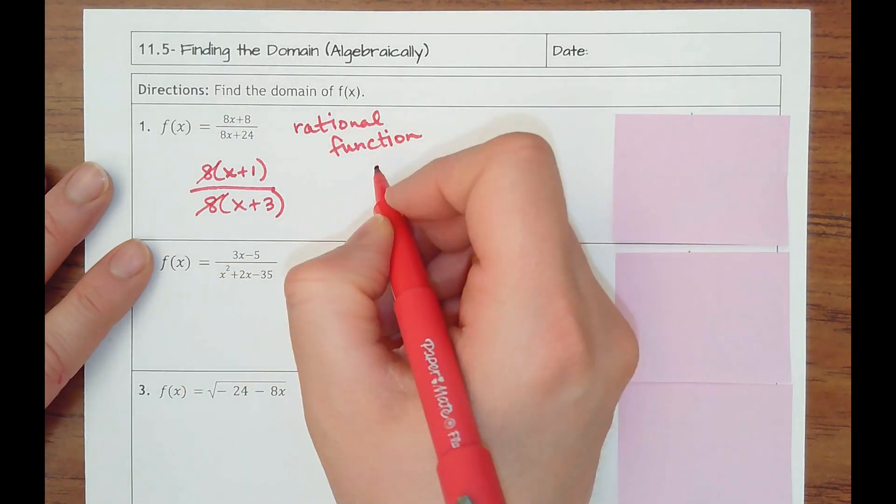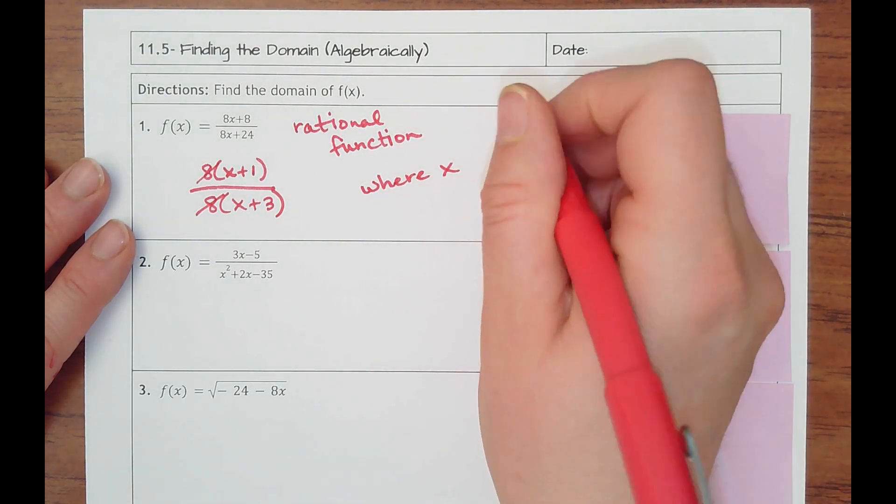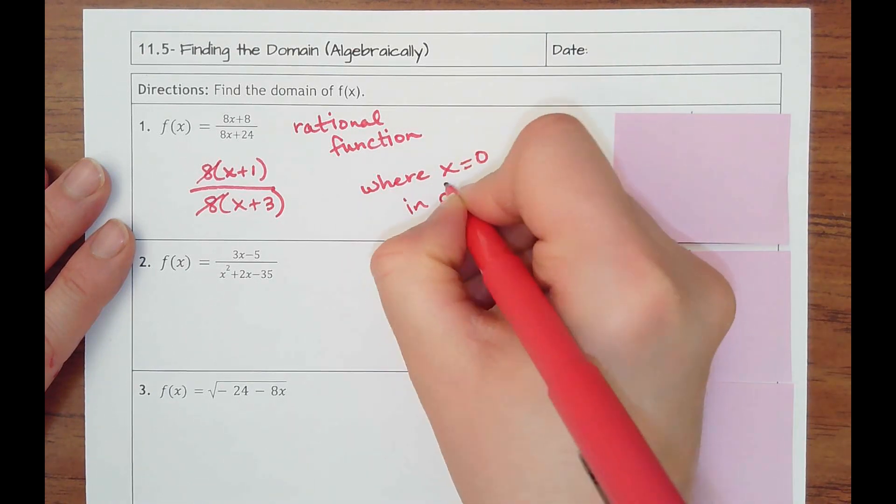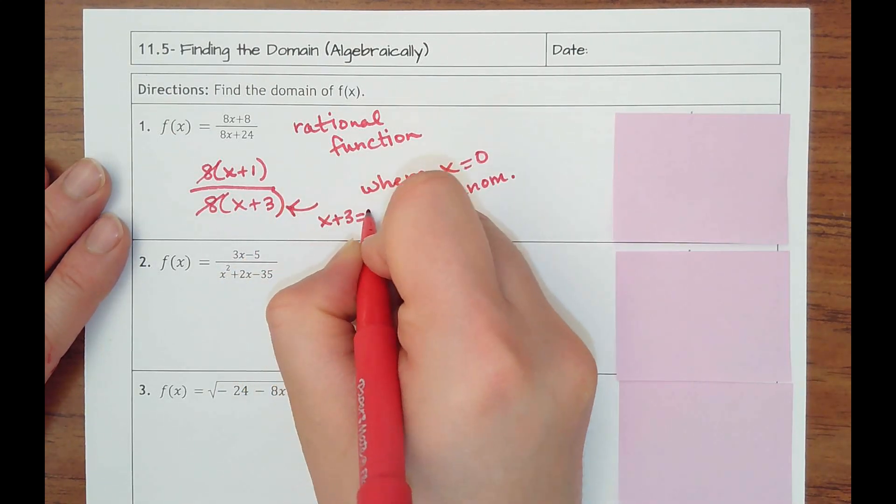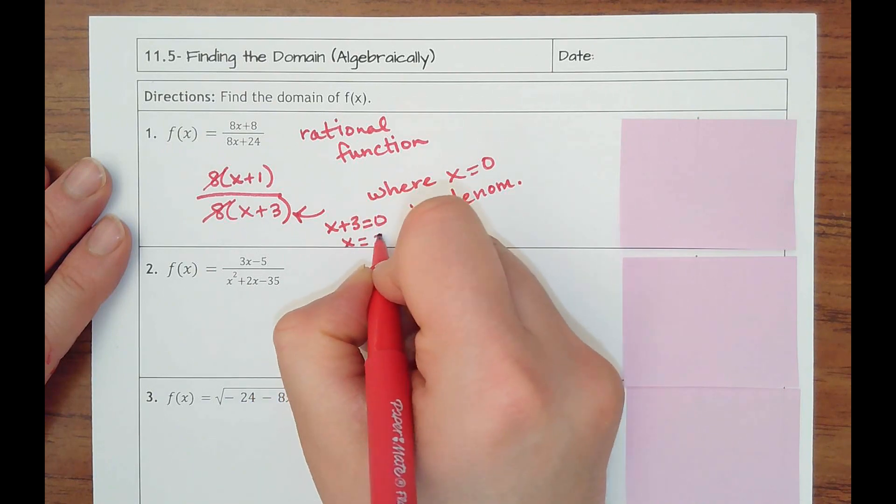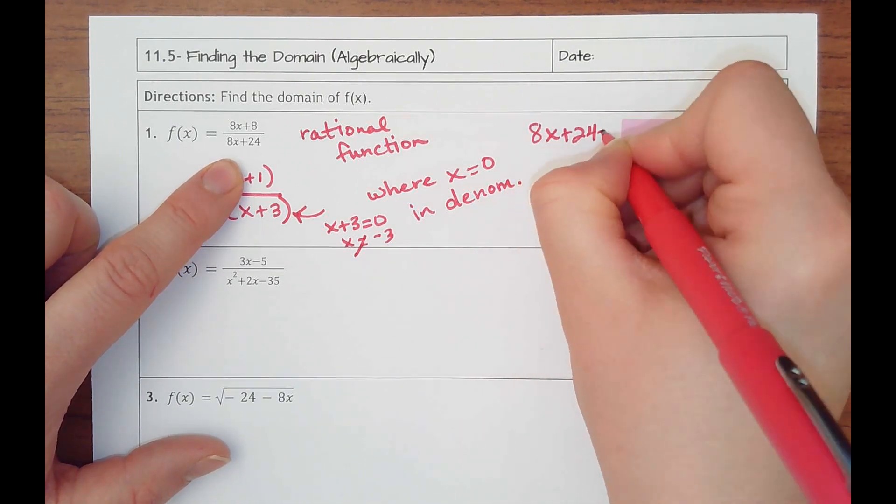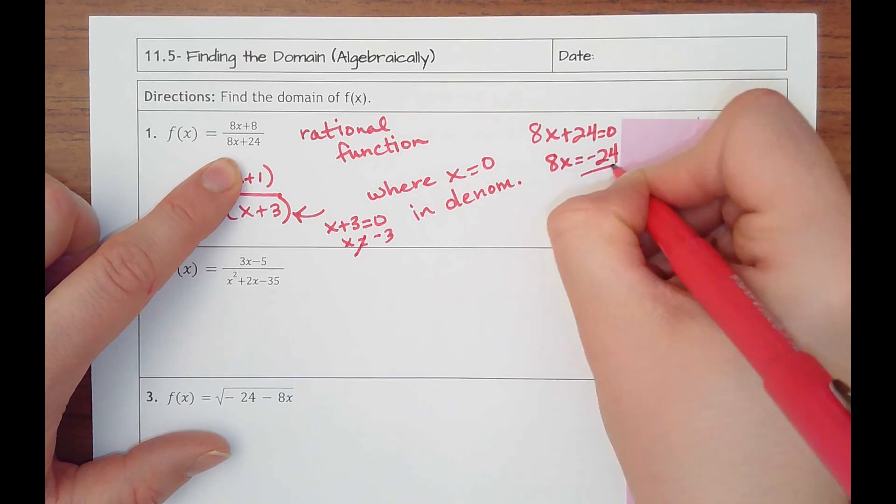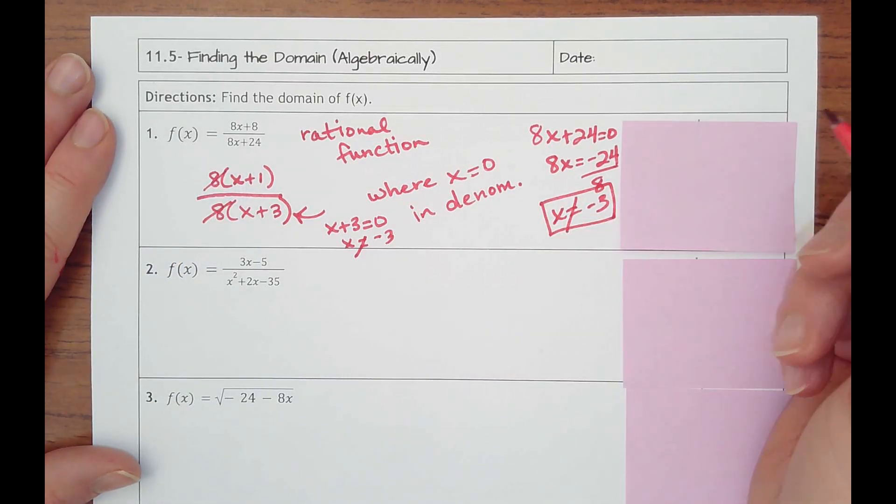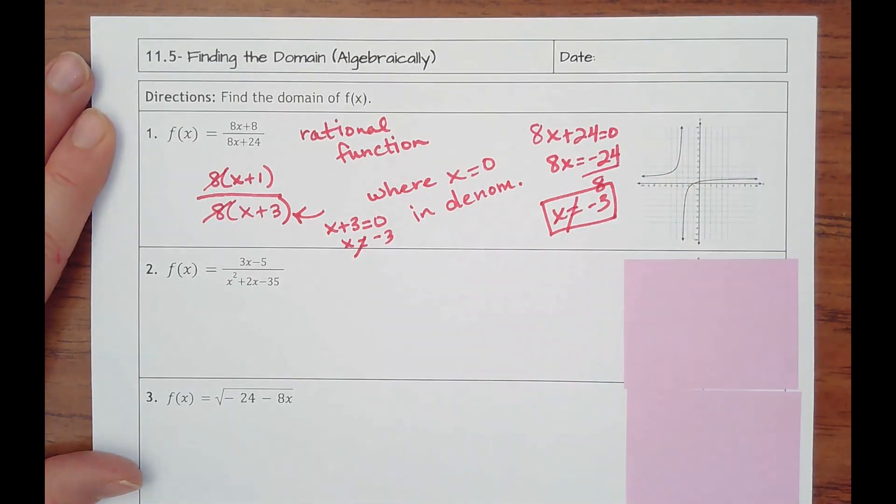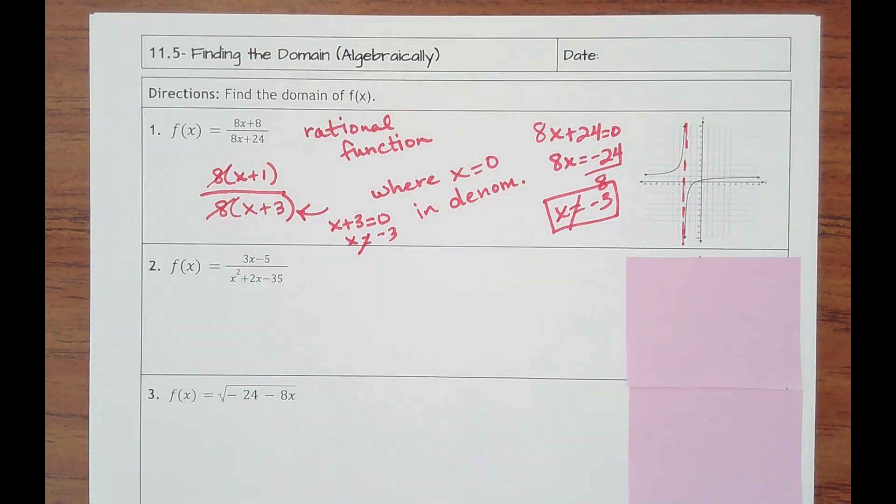And so when we're doing domain, that is where x is a problem, and where it's a problem is where x equals zero in the denominator. And so we just can't have this equaling zero. So I would set my x plus 3 equal to zero. I would subtract 3 over, and so x can't be negative 3. Now, if you wouldn't have factored from the beginning, you would still see that setting that equal to zero would get the same answer. So either way, it doesn't matter. X such that x cannot be negative 3. And then that's the graph. And you can see right there is where the asymptote's at.